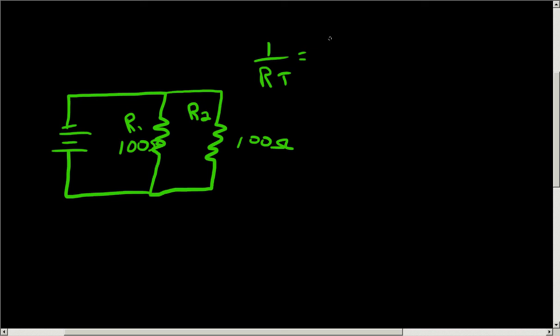...which was 1 over 100, plus the inverse of R2, which is 1 over 100, which gives us 2 over 100.